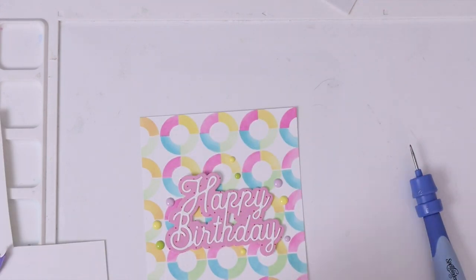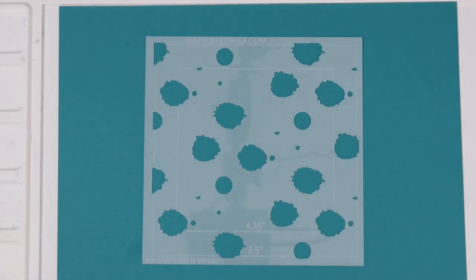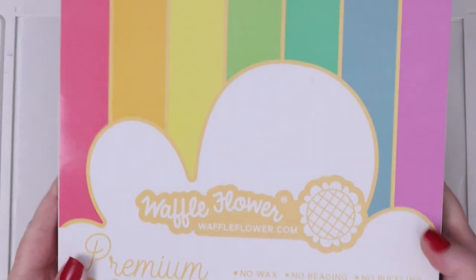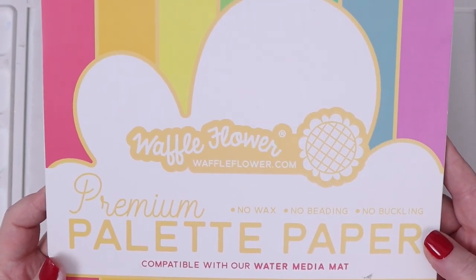For the next card I'm using the Ink Spots stencil. Now you could definitely just ink over this stencil, but I used Tombow dual brush pens to give it an even more watercolor artistic look. This is the Ink Spots stencil which has guides for four and a half and five and a half inch squares.